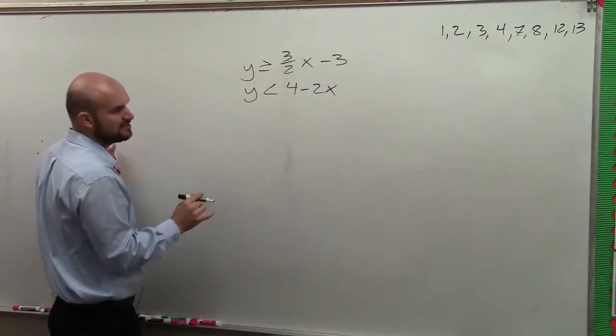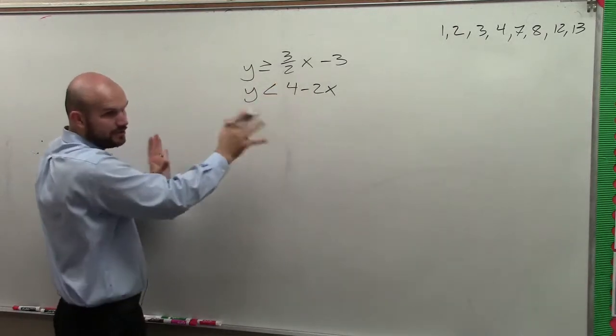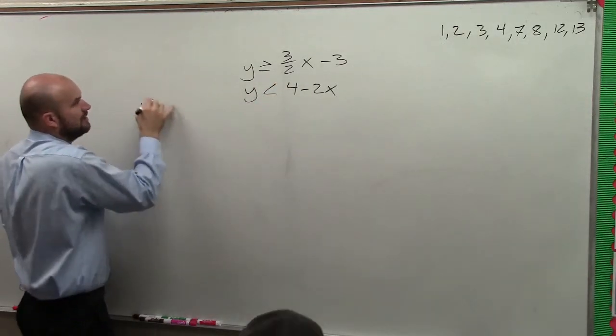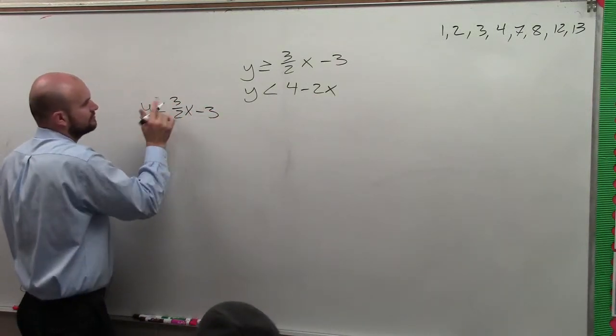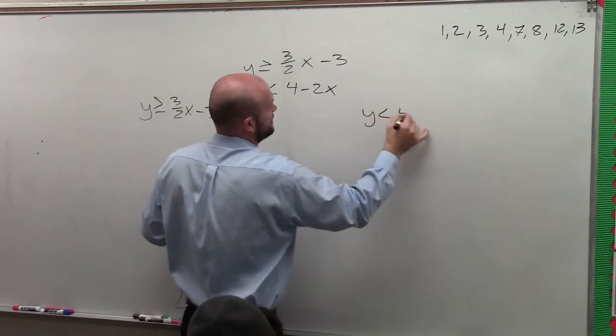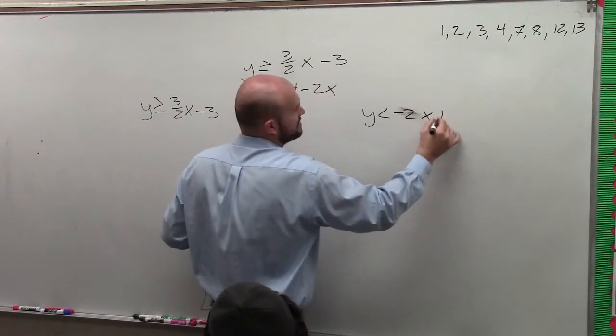all we're simply doing when we're solving the systems of inequalities, basically we're just going to graph these, just how we graph them separately. So we have y is greater than or equal to 3 halves x minus 3. And then I have y is less than, let's rewrite this in slope-intercept form, negative 2x plus 4.